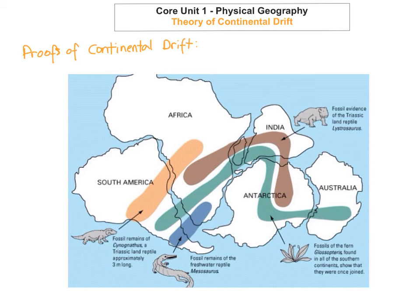Another proof of continental drift is the matching rock types found on continents that are now thousands of miles apart. The last proof is seafloor spreading — ocean floors widen as new rock is formed along mid-ocean ridges, at constructive plate boundaries. The newer rocks are found along the ridge and the older rocks are furthest away. This can be proven by looking at the Mid-Atlantic Ridge, where the newest rock is closest to the mid-ocean ridge and the rocks further away are older. This proves the theory of continental drift even further.